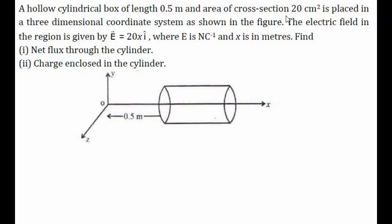This is the three-dimensional coordinate system and this is the cylindrical box. The length of the cylindrical box is 0.5 meter and the area of cross-section is 20 centimeter square, noted by S.